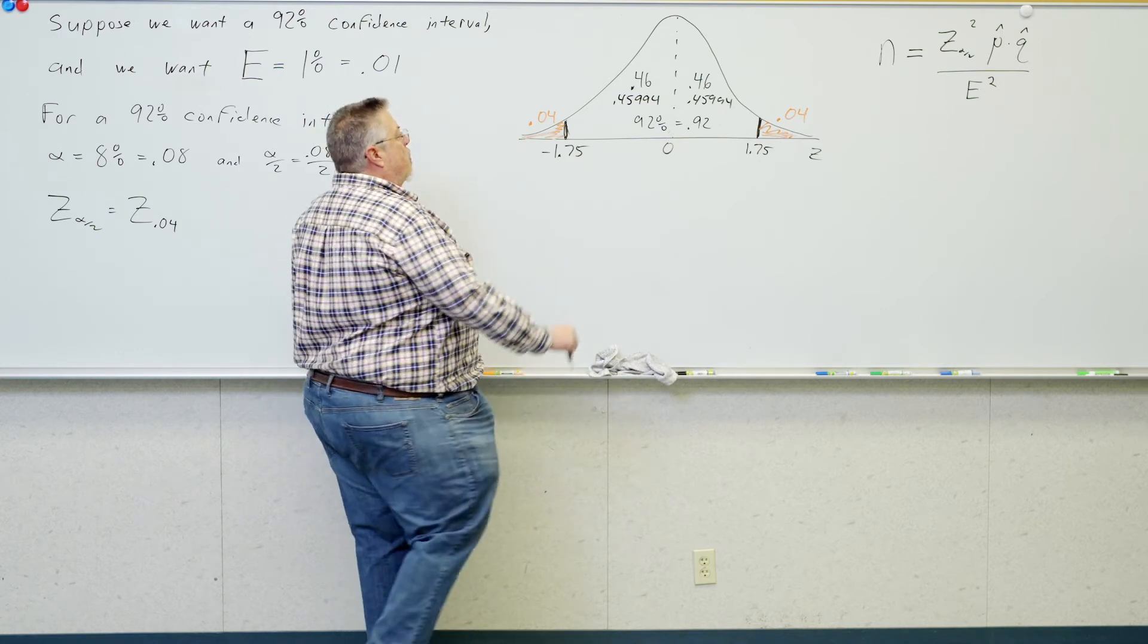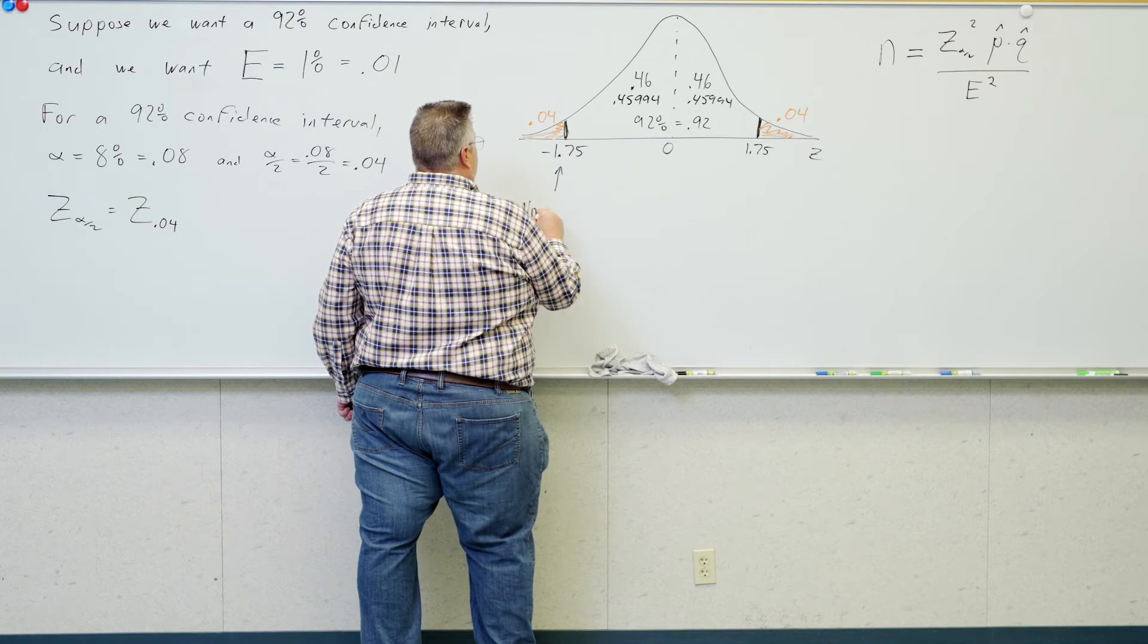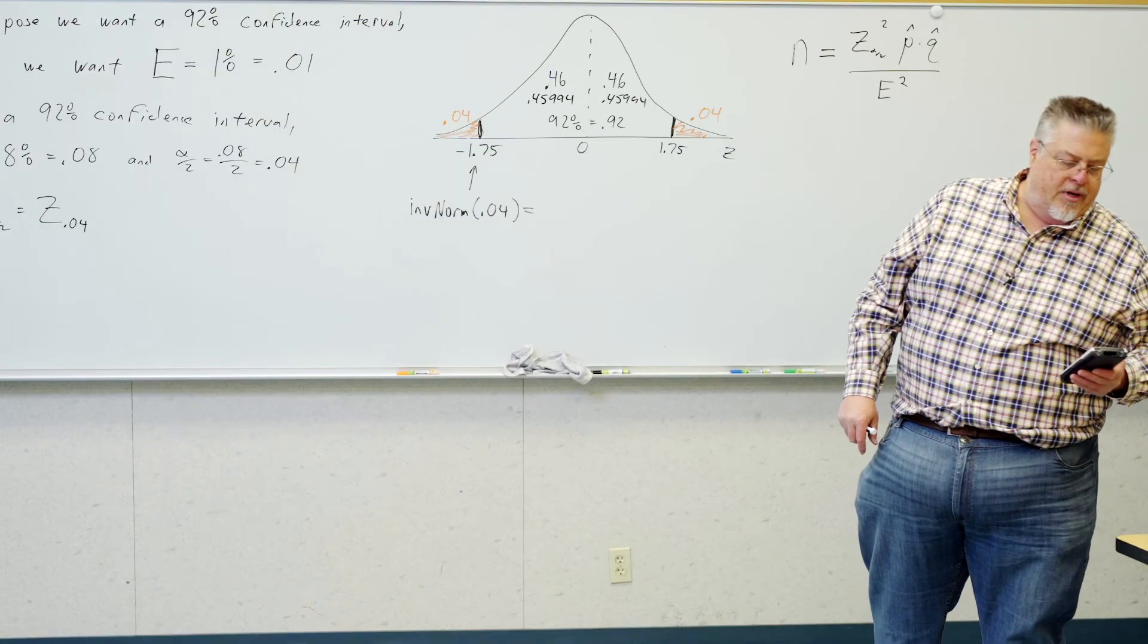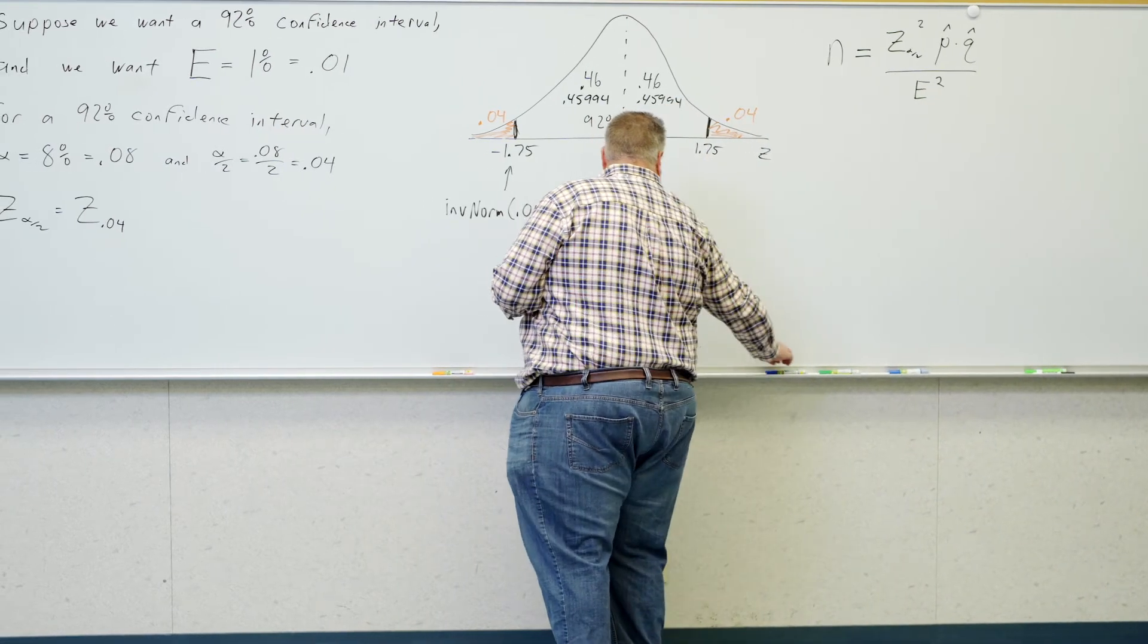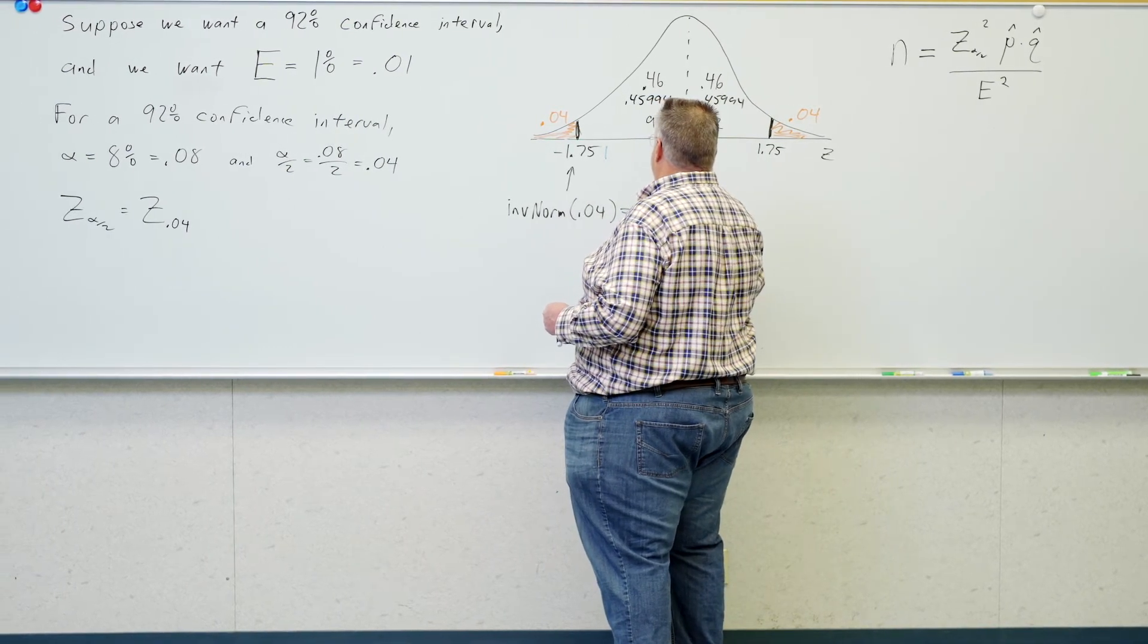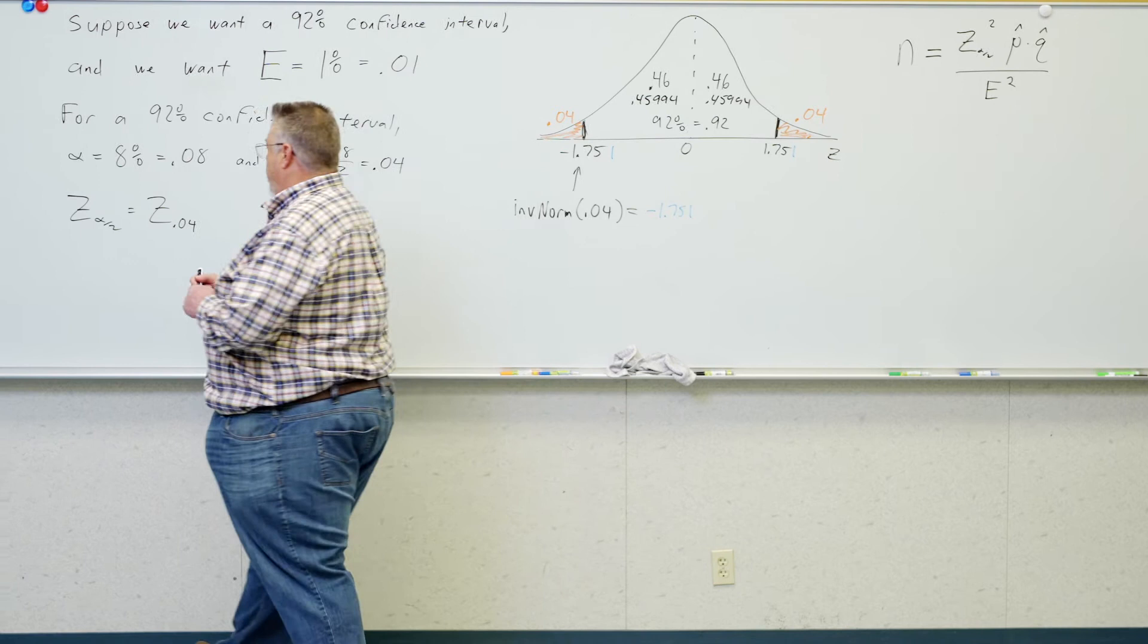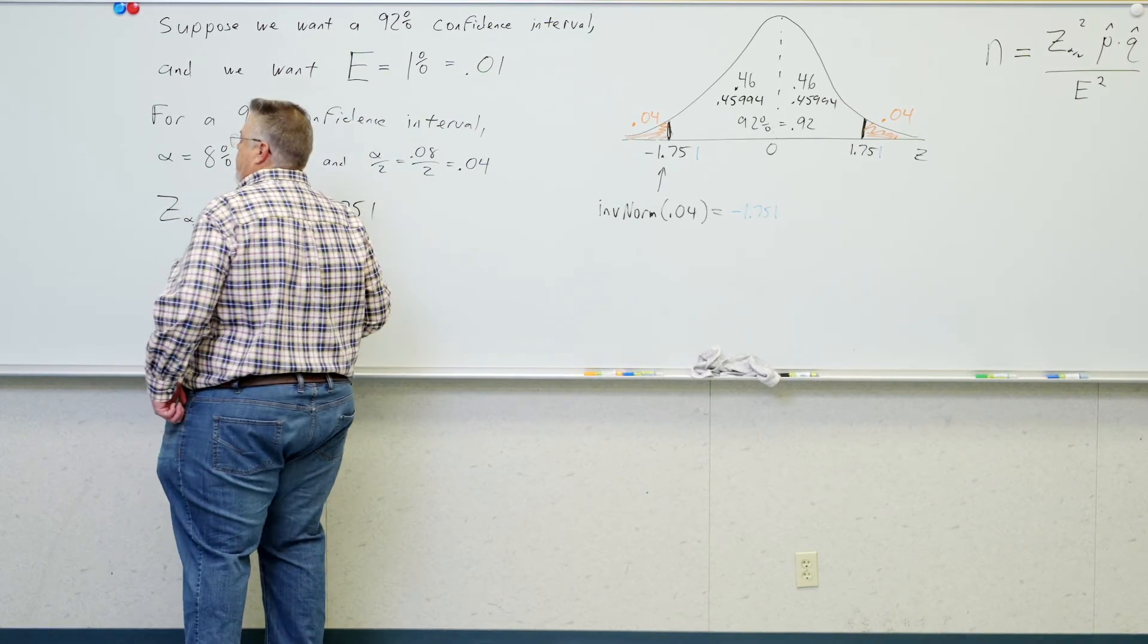The other way I could have gotten this number is I went inverse normal .04 on my calculator. And it's giving me negative 1.751. Of course, by symmetry, that's going to be positive 1.751.